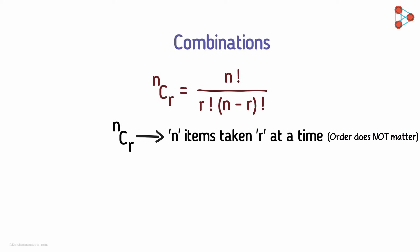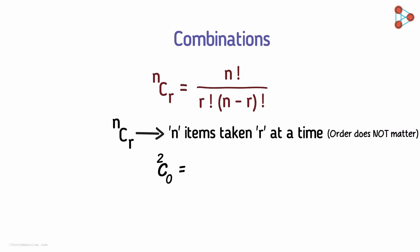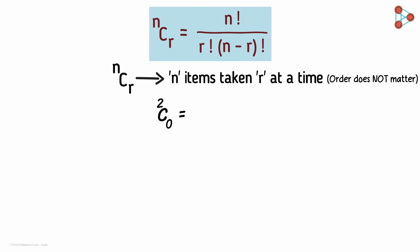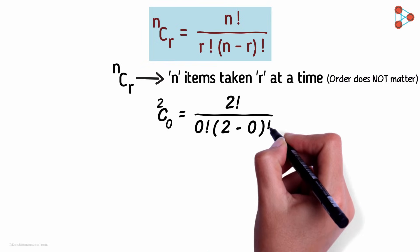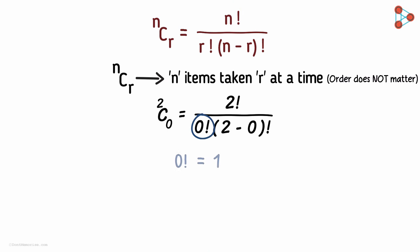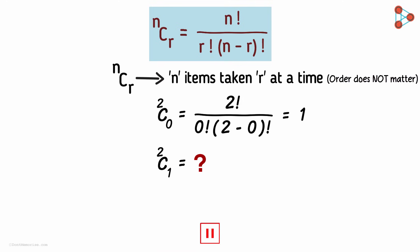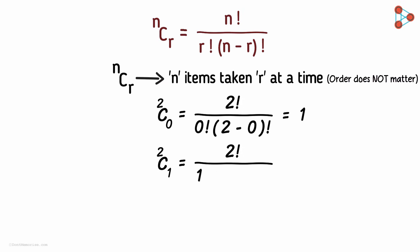Now, let me ask you one question. Can you tell me the value of 2C0? We can use this formula. We get it as 2 factorial over 0 factorial multiplied by 2 factorial. We know that 0 factorial is 1, so we get this value as 1. Now by using the same formula, can you tell me the value of 2C1? It's 2.